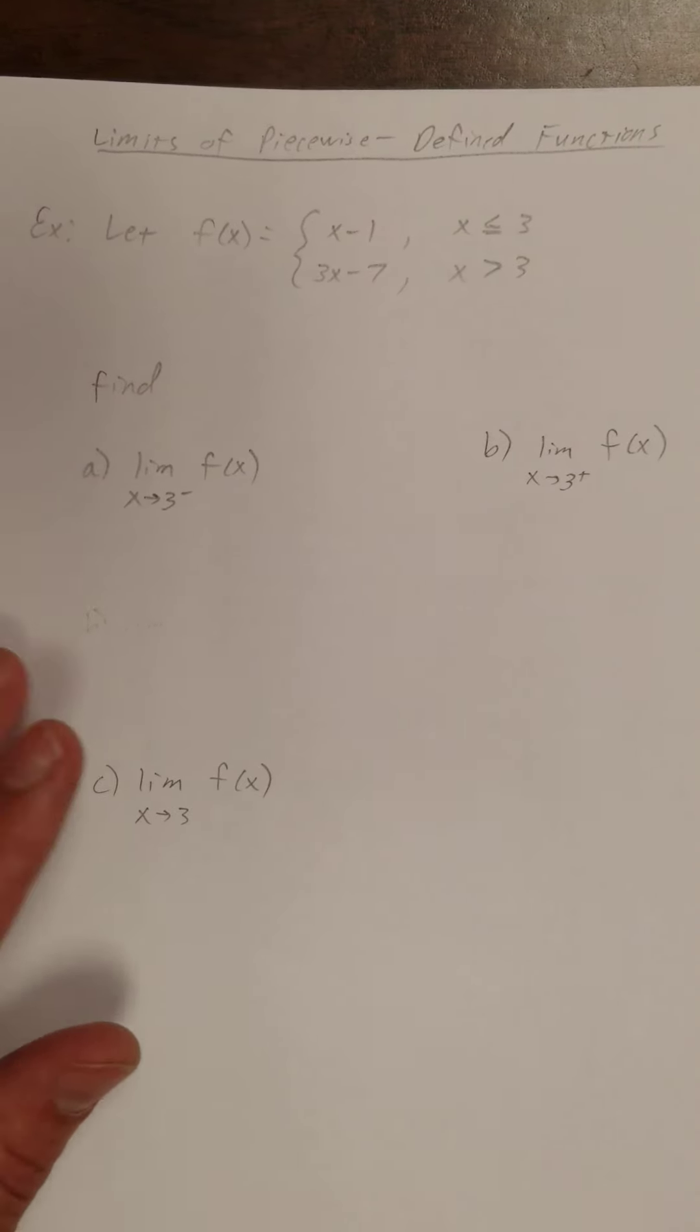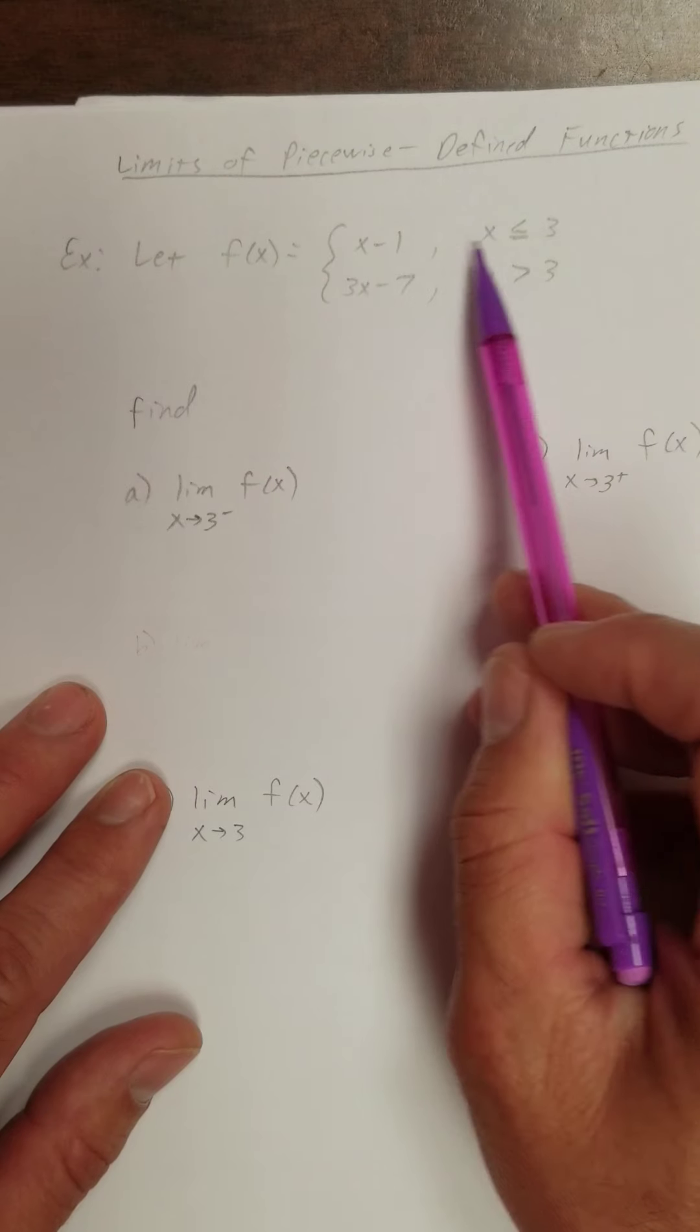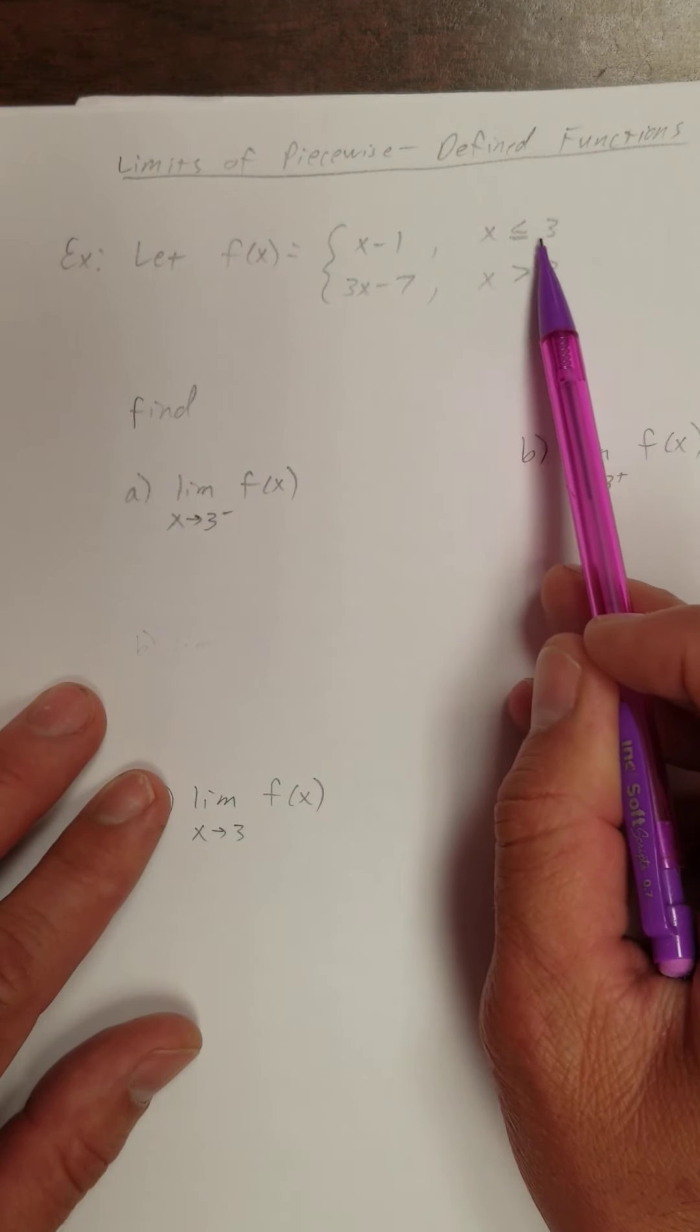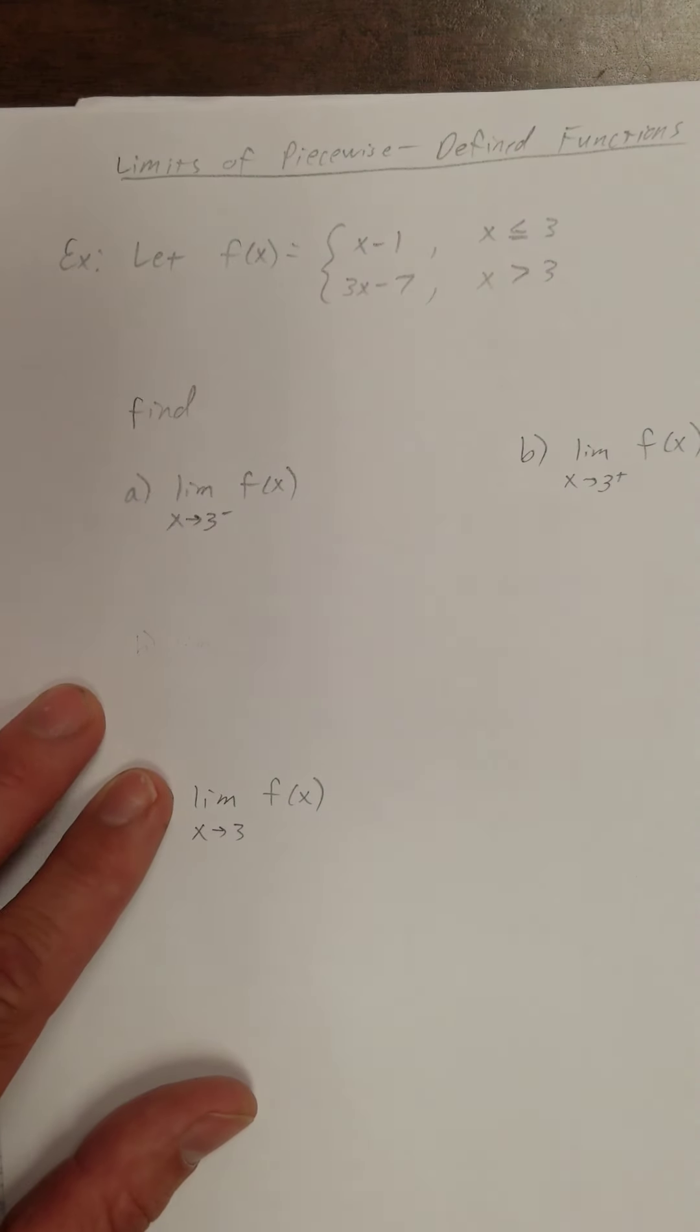Let's look at limits of piecewise defined functions. Let's suppose f(x) is equal to x minus 1 whenever x is less than or equal to 3, and f(x) is equal to 3x minus 7 when x is greater than 3.